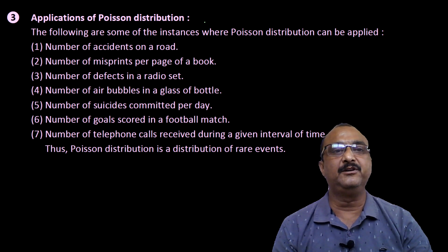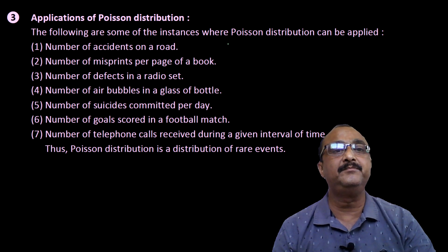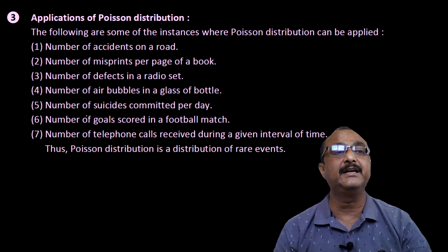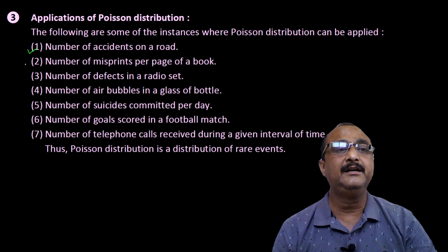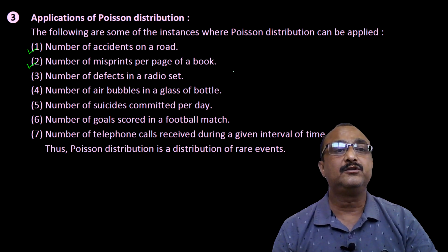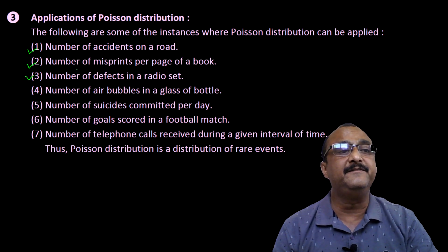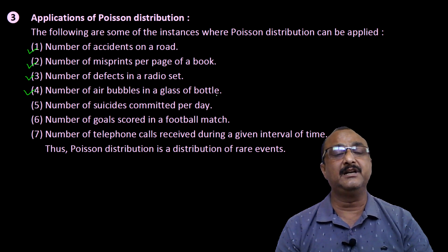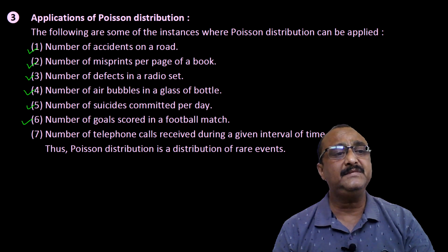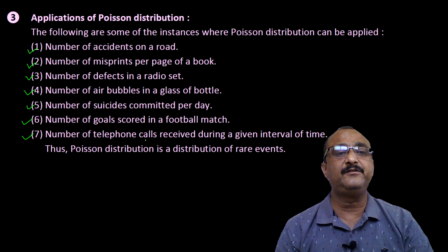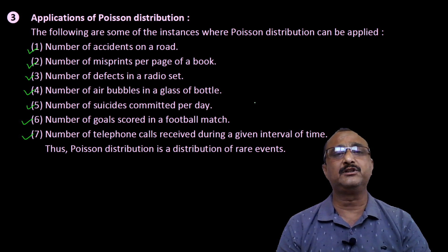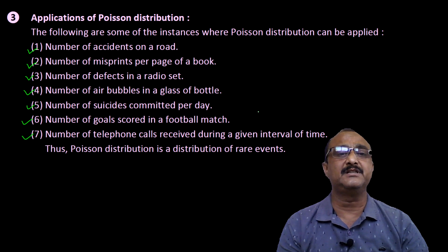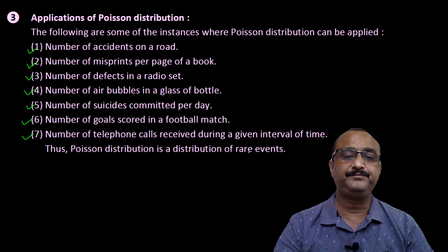Our last topic of theory is applications of Poisson distribution. Poisson distribution can be applied to rare occurrences. Examples include: number of accidents on a road, number of misprints per page of a book, number of defects in a radio set, number of air bubbles in a glass bottle, number of suicides committed per day, number of goals scored in a football match, number of telephone calls received during a given interval of time. Thus, Poisson distribution is a distribution of rare events, such as defective screws in a manufacturing process.